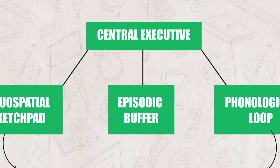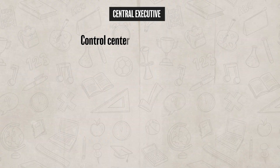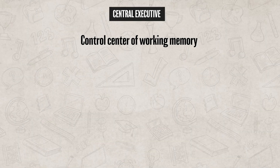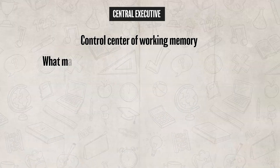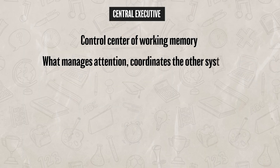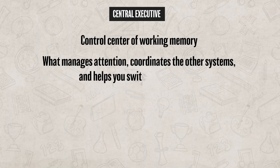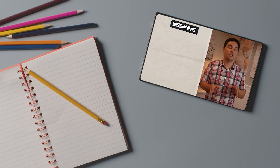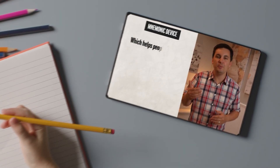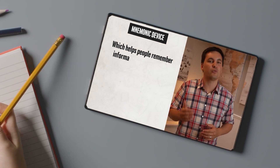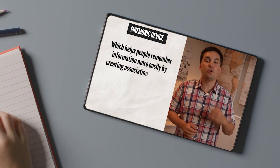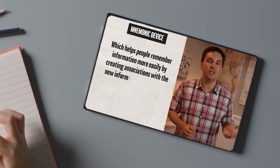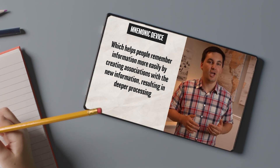Holding all of this together is the central executive, which you can think of as the control center of working memory. This is what manages attention, coordinates the other systems, and helps you switch between tasks. For instance, if you're using guided notes right now and taking notes on the video, the central executive helps you decide when to listen carefully and when to write things down.